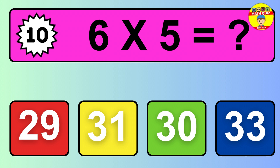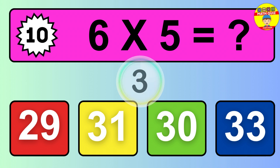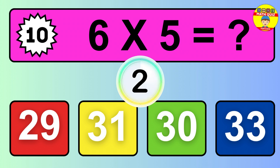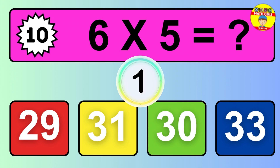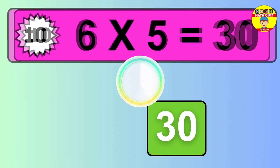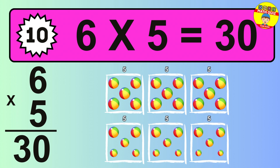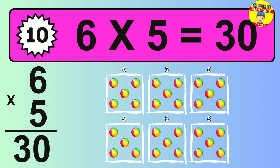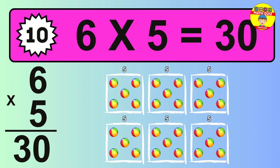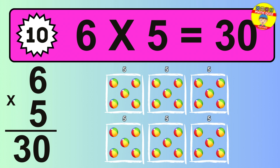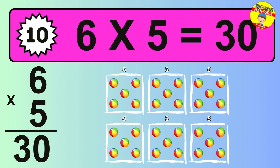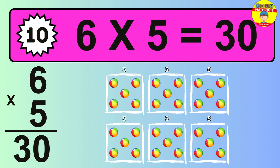Question 10. 6 times 5 equals what? The answer is 6 times 5 is 30. To calculate, we have 6 groups with 5 balls each one. So, how many balls do we have? 30 balls.